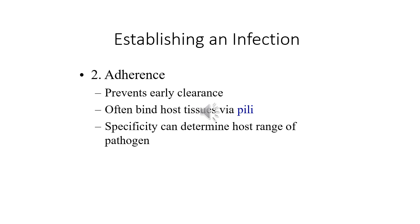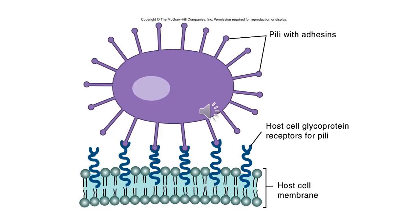Adherence is a mediated process. Pili are protruding structures — tiny arm-like objects — that microbes use to adhere to host tissues. Another important concept is tissue tropism: some microbes favor the respiratory tract, some favor the gastrointestinal tract, and some may target multiple sites. This depends on the character of each particular infectious agent. You can see in this slide the process of pili with adhesins binding to host cell glycoprotein receptors.